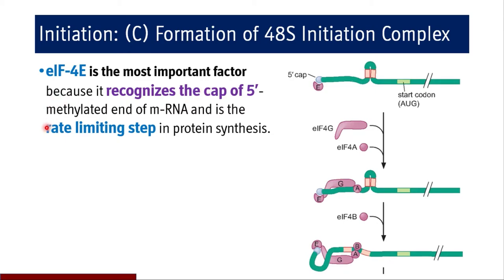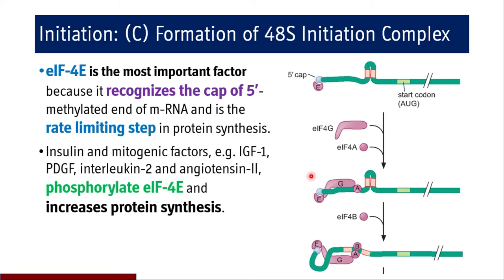Now let us see how this stage is regulated. EIF4E is the most important factor here, recognizing the cap at the 5' methylated end of mRNA — this is the rate limiting step in protein synthesis. EIF4G and EIF4A are recruited, then EIF4B comes and hydrolyzes ATP to reduce the complex structure of the 5' methylated end of mRNA. Factors like insulin, IGF1, PDGF, interleukin 2, and angiotensin 2 phosphorylate EIF4E and increase protein synthesis.